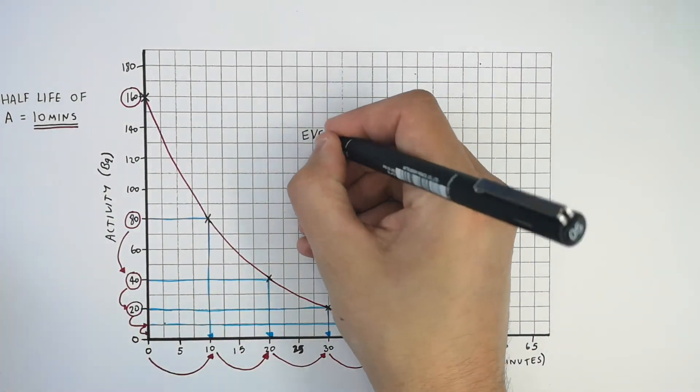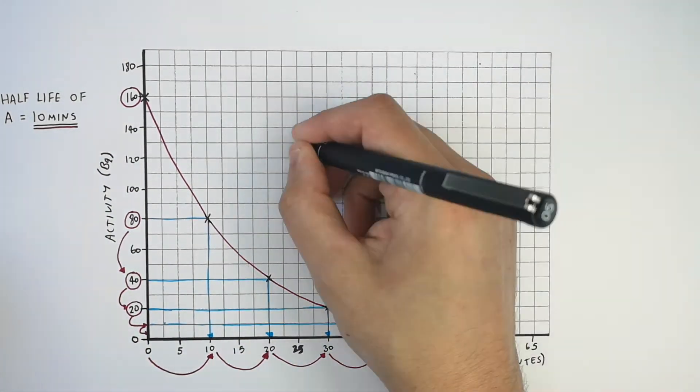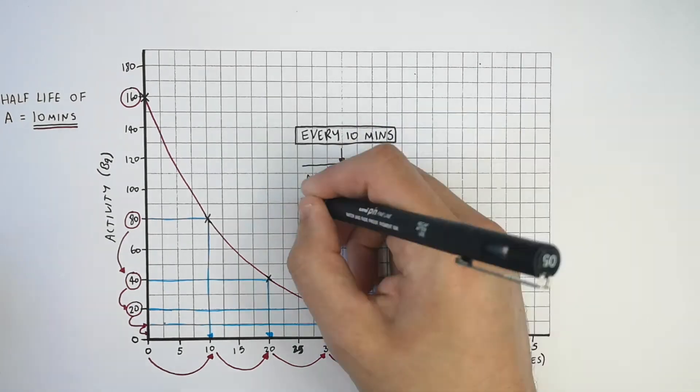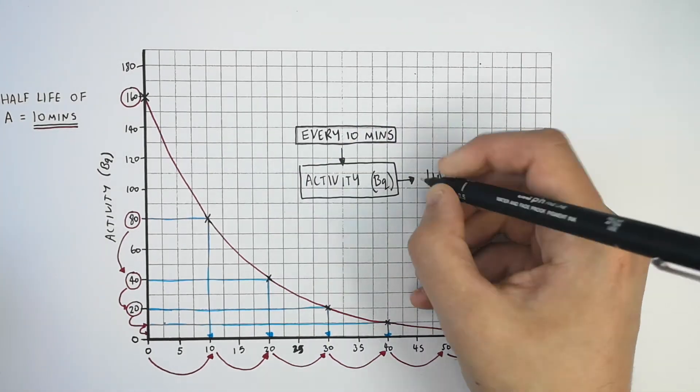So remember, every 10 minutes the activity in Becquerels is going to half.